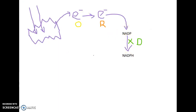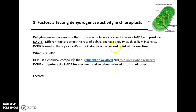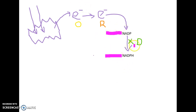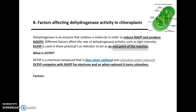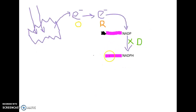DC-PIP effectively takes the place of NADP. It will gain these electrons and the proton in order to form the reduced DC-PIP, which will be colorless, and that allows us to see when the end point of the reaction has happened. So if we did this reaction and the test tubes remained blue, that suggests DC-PIP has not been reduced — it's still oxidized — so dehydrogenase is not working. However, if the color was colorless, that implies DC-PIP has effectively competed with NADP for electrons to form reduced DC-PIP, and therefore dehydrogenase must be working.